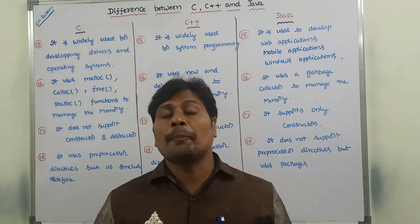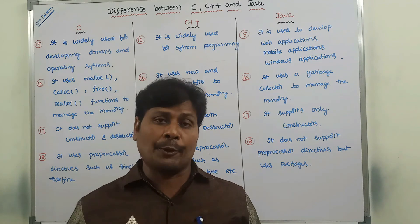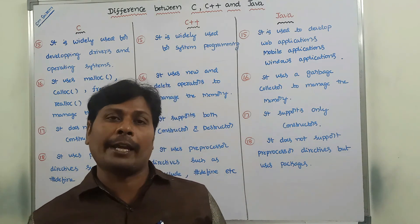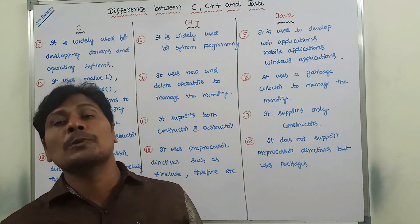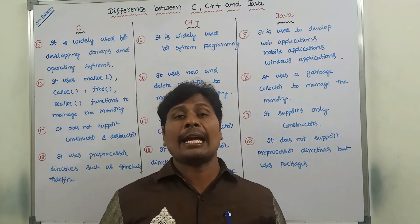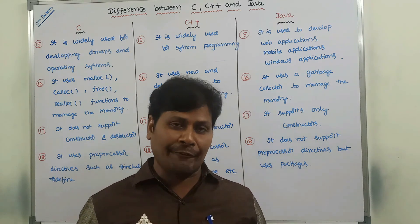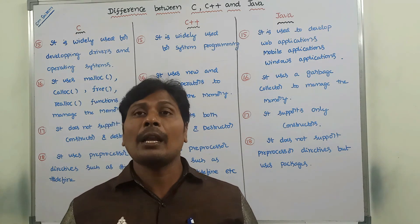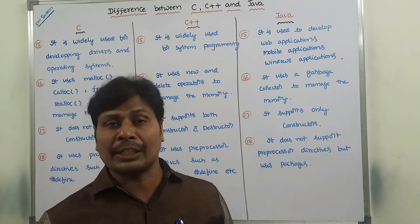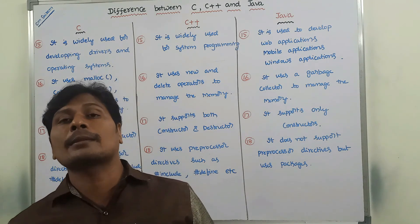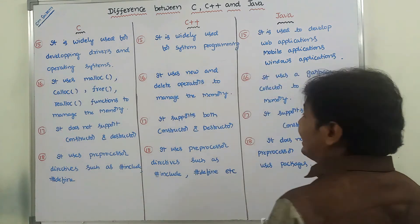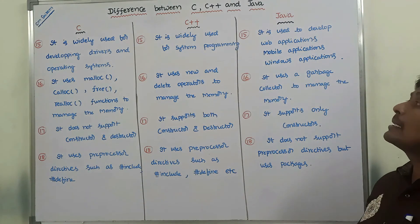C language uses preprocessor directives such as #include and #define. C++ also supports preprocessor directives such as #include and #define. But Java does not support preprocessor directives and only supports packages. So these are the 18 differences between C, C++ and Java language.